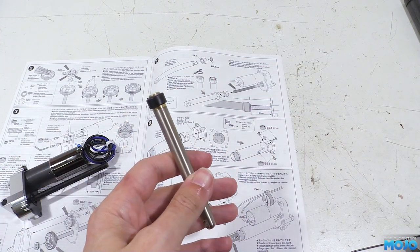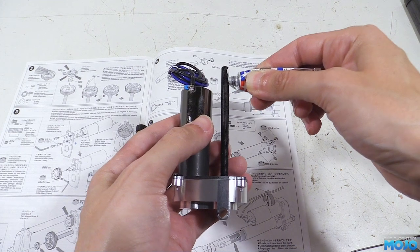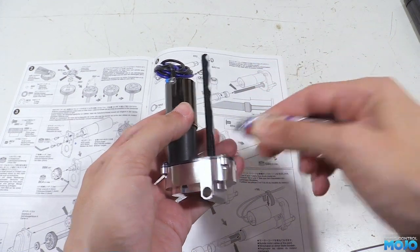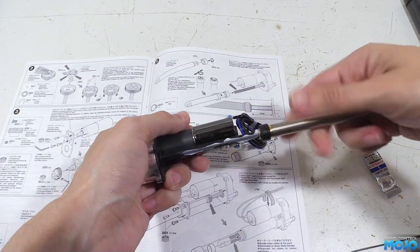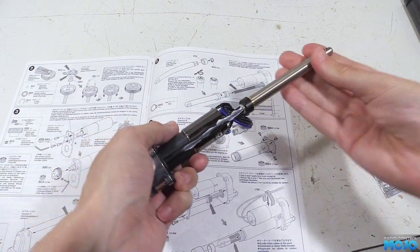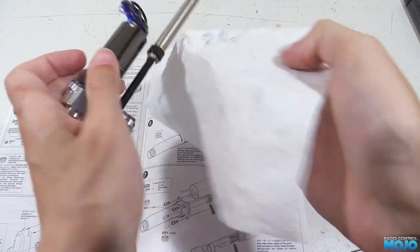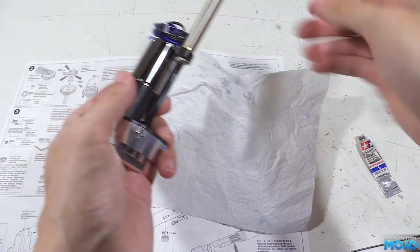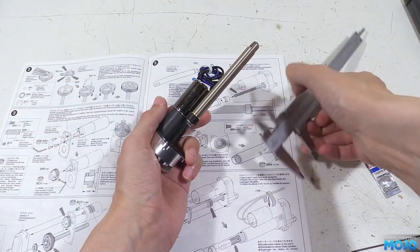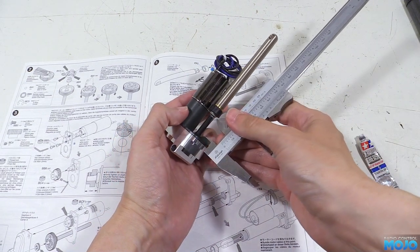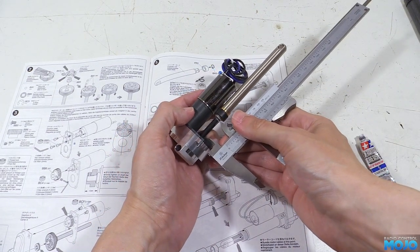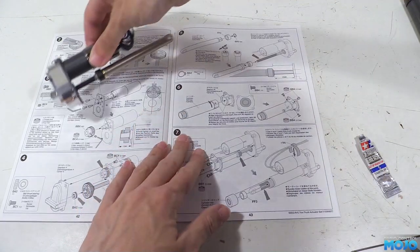With that done, we can grease up the lead screw and thread on the rod. As it goes on, you're going to want to mop up the excess grease so it doesn't make a mess. As an initial setup, we want to thread it on so there's 25mm between the end of the rod and the motor plate. This should let us install it on the chassis without having to worry too much about it being just the right length.